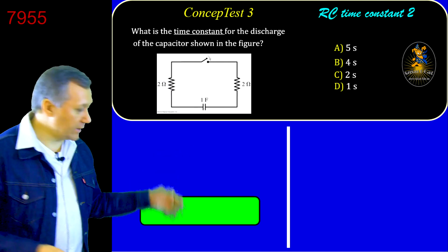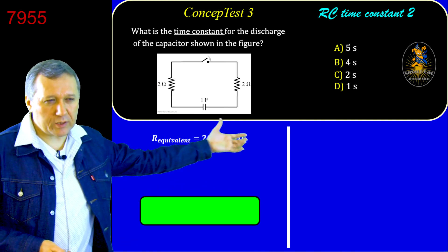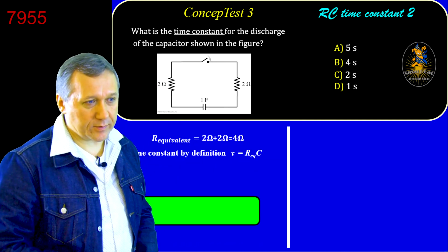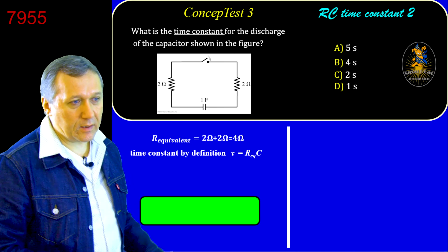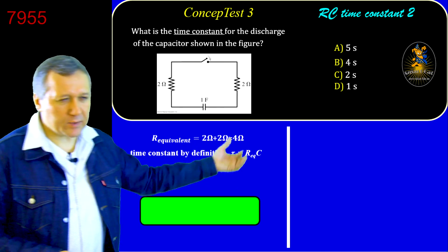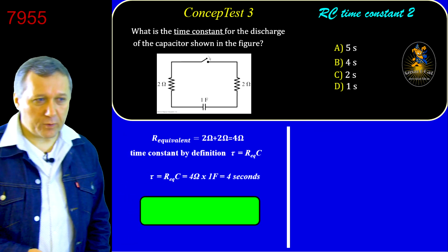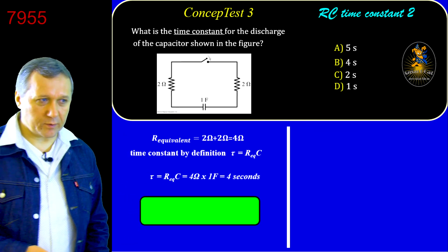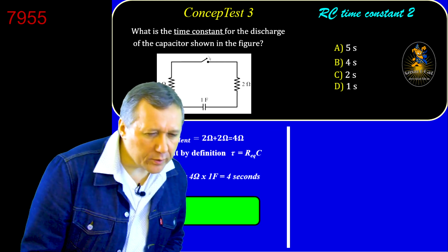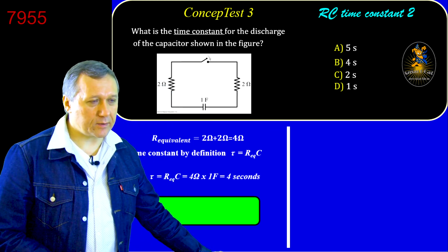Most students answered correctly — τ = 4 seconds. Thank you all. The class ran a bit longer than expected, but we covered the complete derivation for the charging RC circuit, the RC time constant, and three conceptual tests.